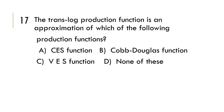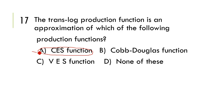Next: the translog production function is an approximation of which production function? The options are: CES production function, Cobb-Douglas production function, VES (variable elasticity of substitution) production function, or none of the above. The translog production function is an approximation of the CES production function, and includes the linear, fixed-capital, and Cobb-Douglas production functions. So option A is correct.